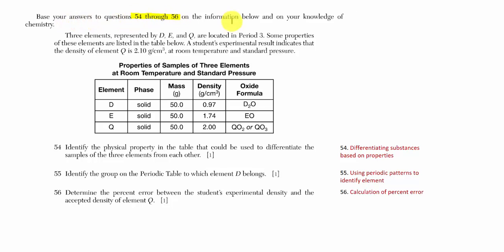For questions 54 to 56, we have a narrative applying to all three questions. Three elements are represented by the letters D, E, and Q. They're all located in period three of the periodic table, and some of their properties are listed in a table. A student's experimental result indicates that the density of element Q is 2.10 grams per cubic centimeter. We'll differentiate substances by properties, use periodic patterns, and calculate a percent error.